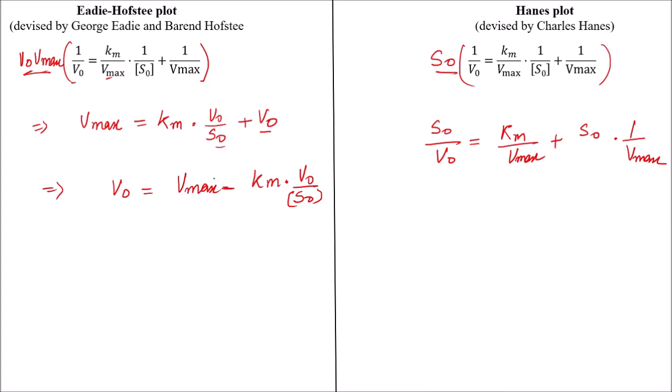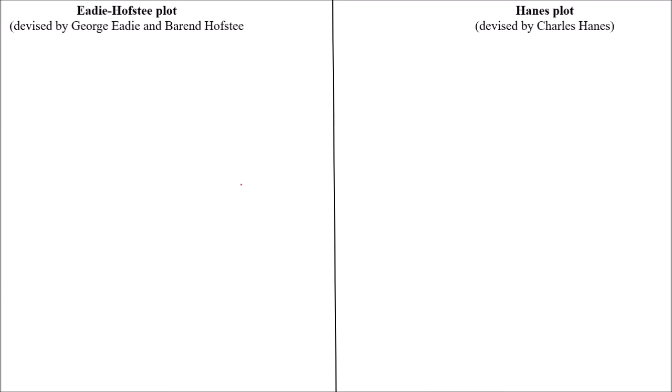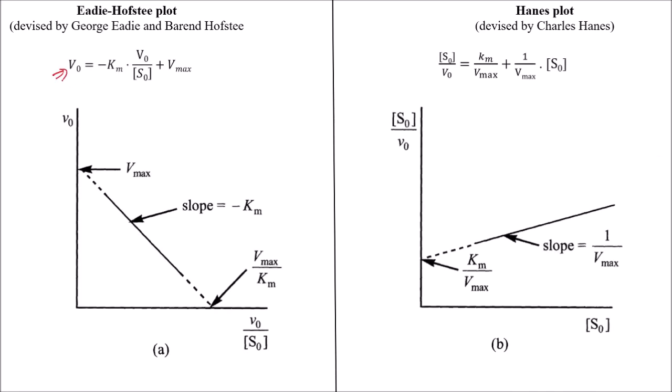When we will plot a graph of these two equations of Eadie-Hofstee and Hanes plot, we will get two different types of plots. In Eadie-Hofstee plot, when you plot this graph, the point where it is meeting on the x-axis will give you the value of V max by Km, whereas on the y-axis it will give you the value of V max and the slope will represent minus Km.